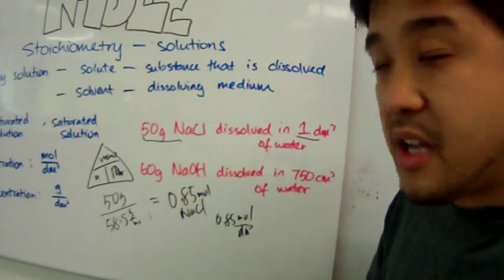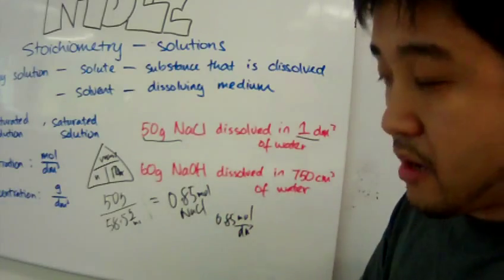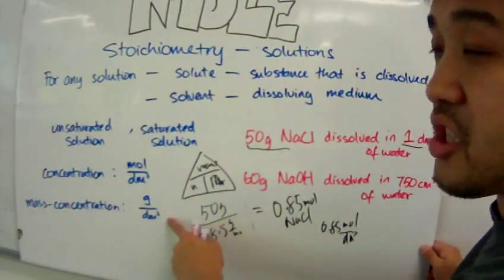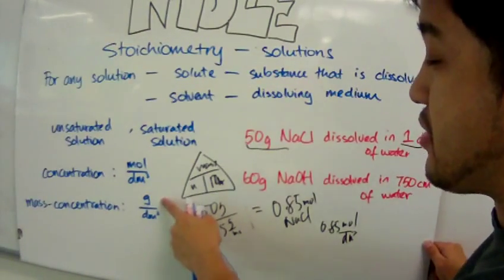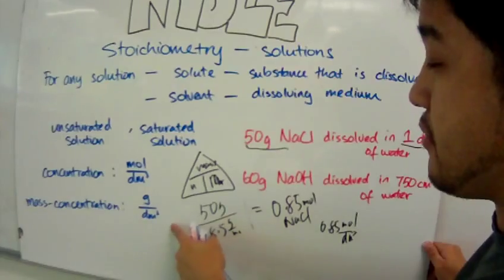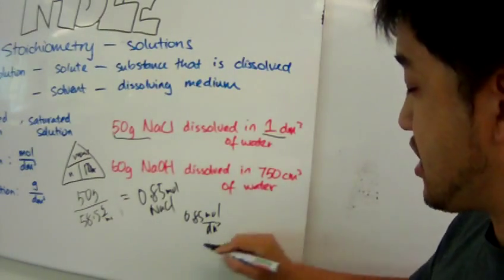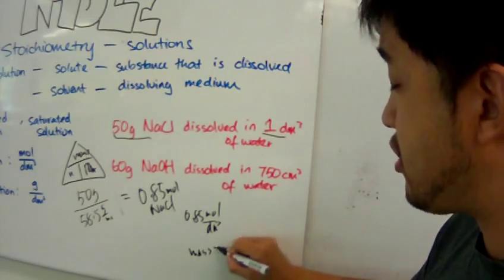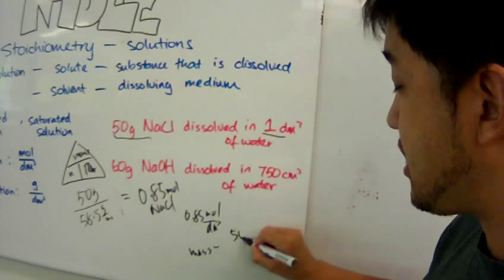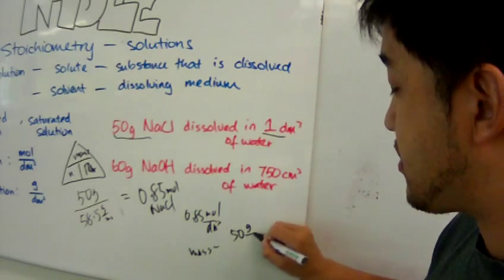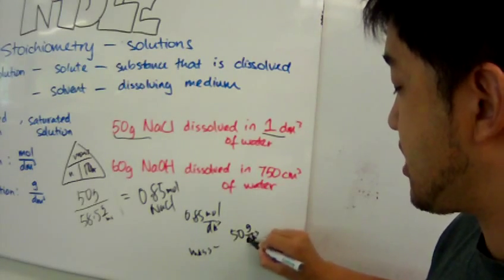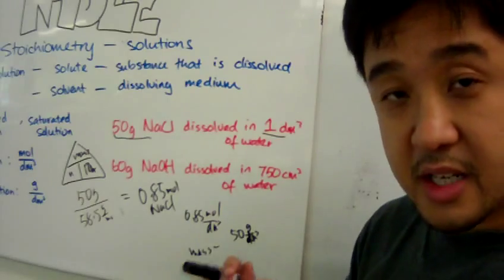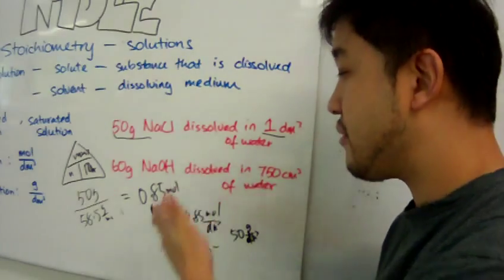What about the mass concentration? Using the mass concentration equation, we take 50 grams divided by 1 cubic decimetre. So the mass concentration is 50 grams per cubic decimetre. Easy peasy.